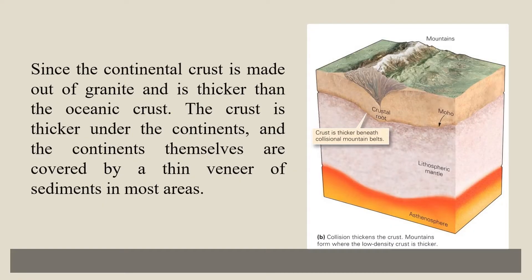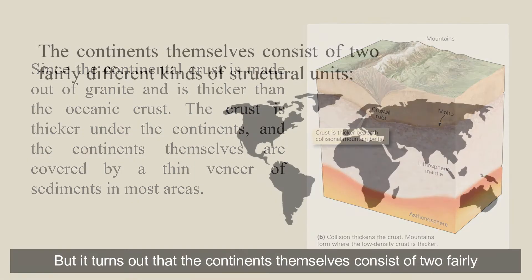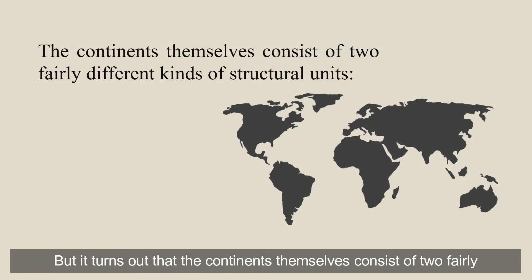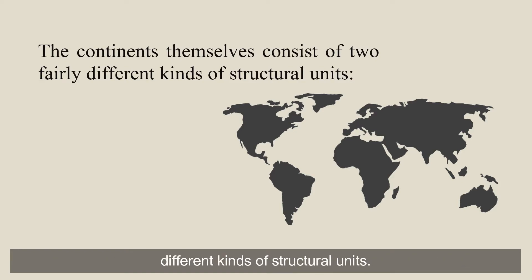Since the continental crust is made of granite and is thicker than the oceanic crust, the crust is thicker under the continents. The continents themselves are covered by a thin veneer of sediments in most areas. But it turns out that the continents consist of two fairly different kinds of structural units.